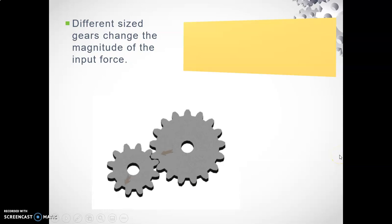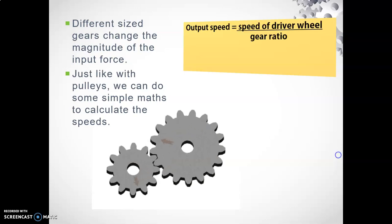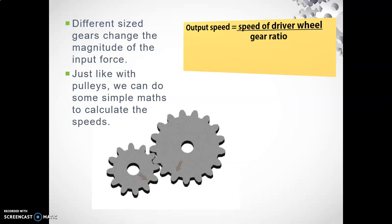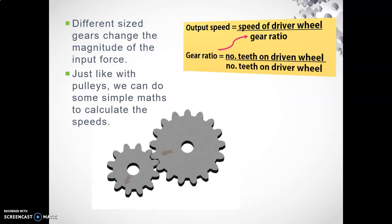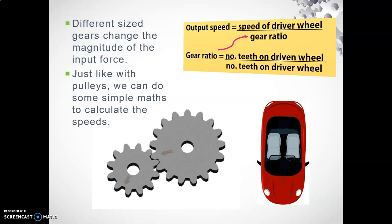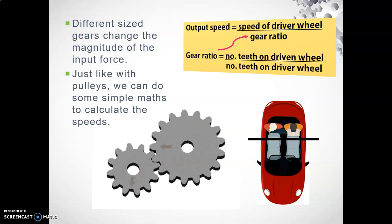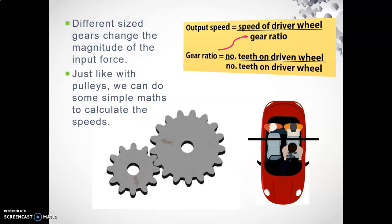Similar to pulleys, different sized gears change the magnitude of the input force. We can do some maths for this too. The output speed equals the speed of the driver wheel over the gear ratio. The gear ratio equals the number of teeth on the driven wheel over the number of teeth on the driver. I have a memory aid for you. If we have a convertible car facing us with a line across it, people in the back are being driven by the person in the front, which is the driver. So the gear ratio is driven over driver.